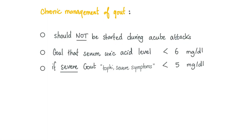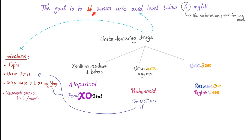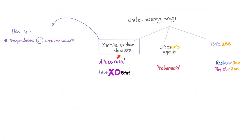For chronic gout management, do not start urate-lowering therapy during an acute attack; wait until the patient has no pain. The goal is to decrease serum uric acid below 6 mg/dL, which is below the saturation point for uric acid. If the patient has severe gout with tophi, decrease uric acid to below 5 mg/dL. Indications for urate-lowering therapy: tophi, urate stones, urine urate more than 1,100 mg per day, or recurrent attacks defined as more than one attack per year. Xanthine oxidase inhibitors are the most commonly used and can be used in both overproducers and under-excretors.